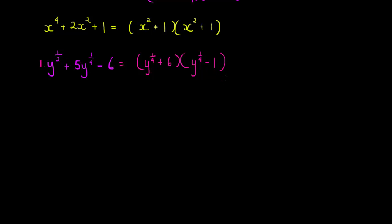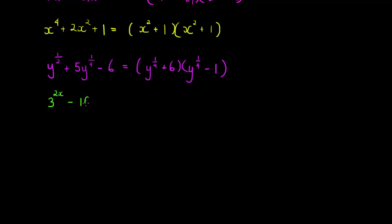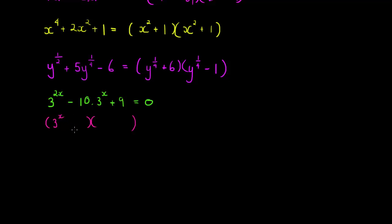Now consider the expression 3^(2x) − 10·3^x + 9 = 0. You could isolate the powers as learned before, but you can also use what we've just learned: three terms where the middle term has exponent x, and the leading term has exponent 2x — which is double. So it might be a trinomial. It is, and it factorizes into two brackets where the base is 3 and the exponent is x — the same as the middle term. Here a = 1, b = −10, and c = 9. The coefficient a is what comes in front of the power, regardless of whether the base is known or unknown.